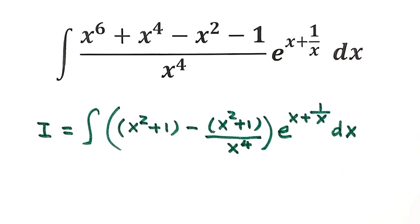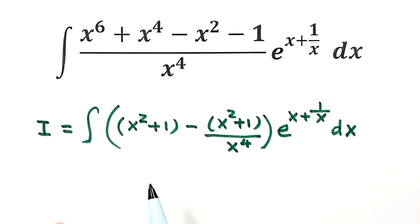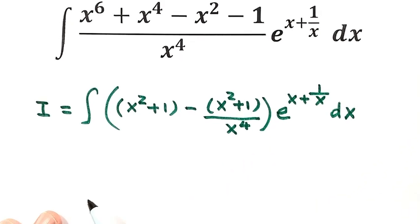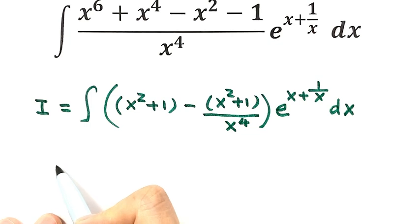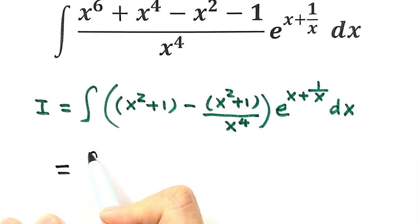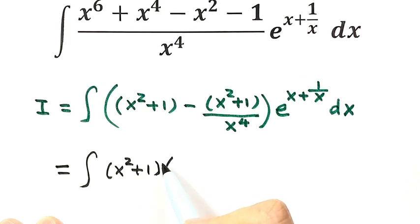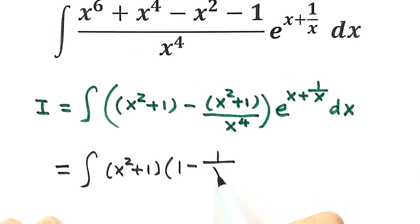Next, you see they have a common factor x squared plus 1. So take out the common factor. Then here: x squared plus 1, times 1 minus 1 over x to the power 4.